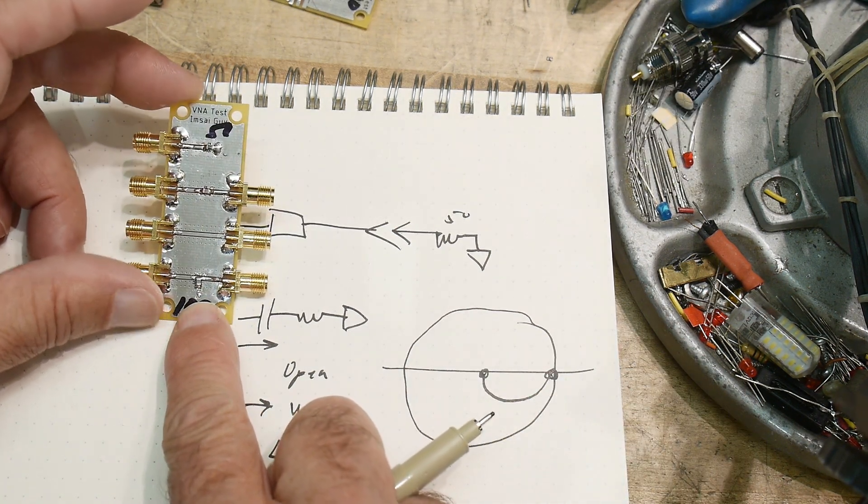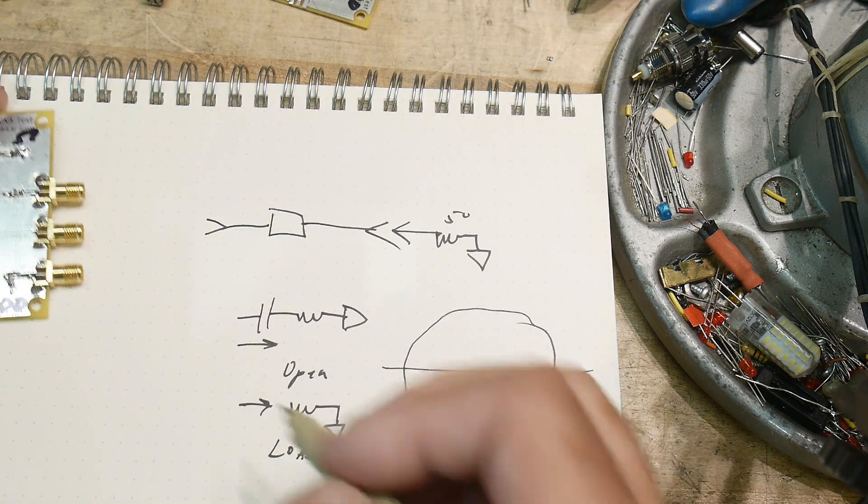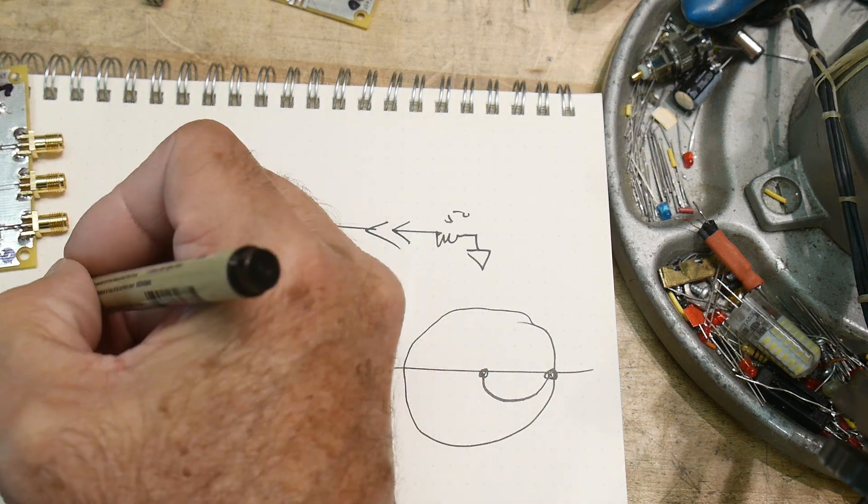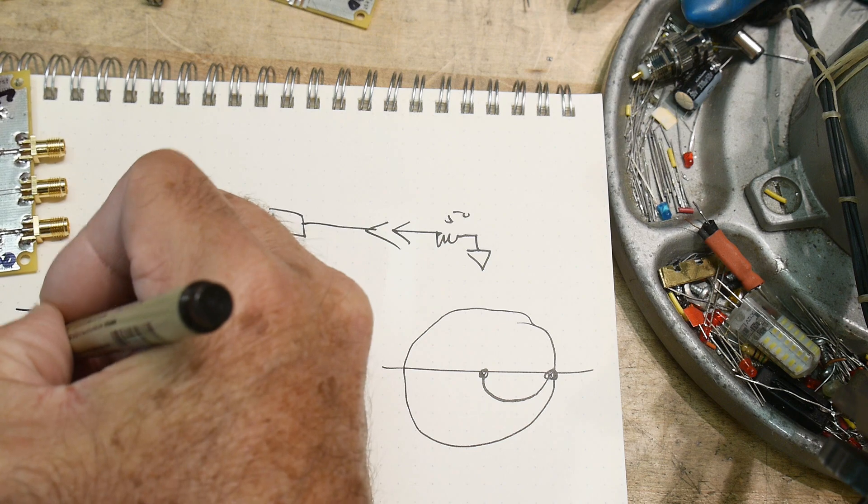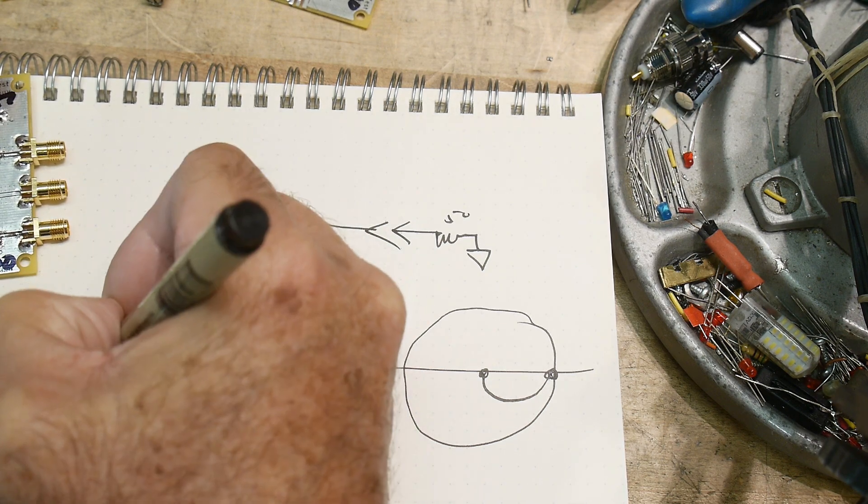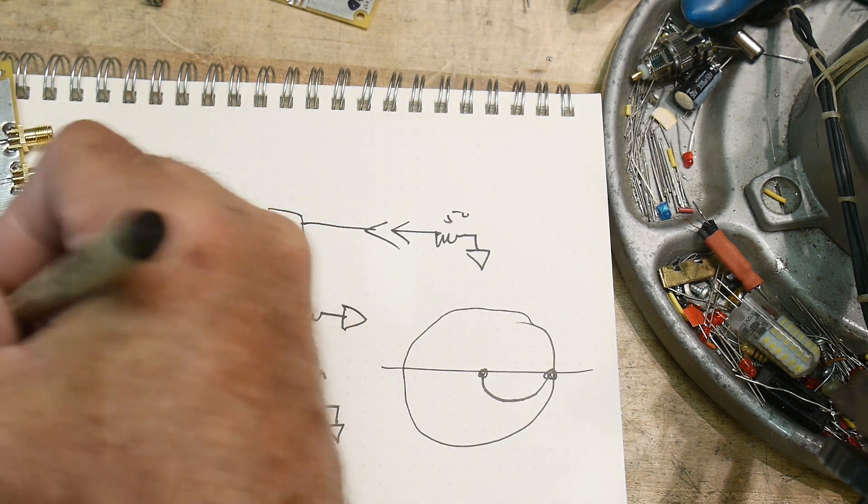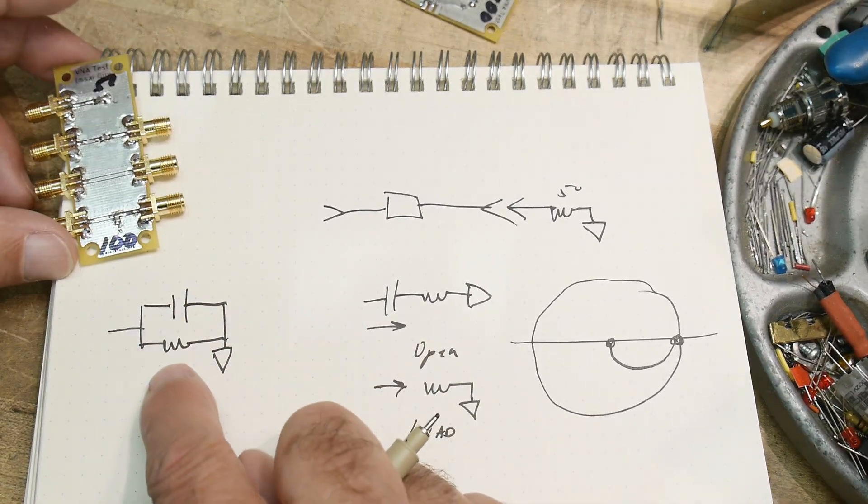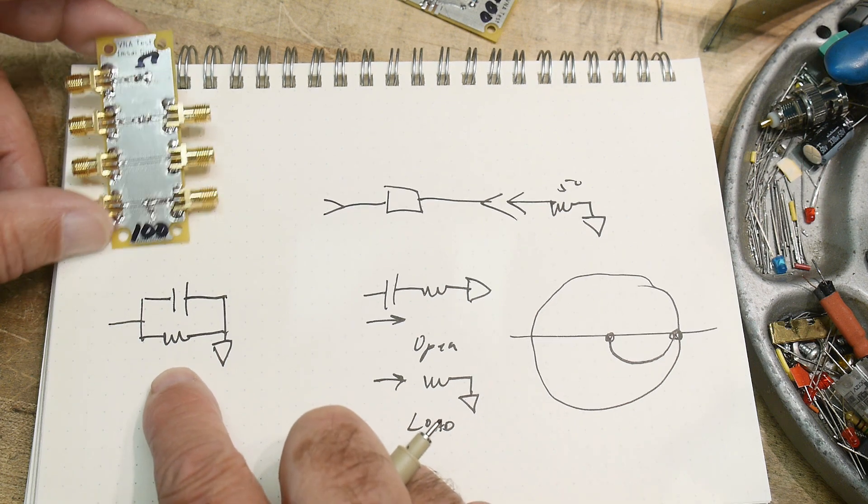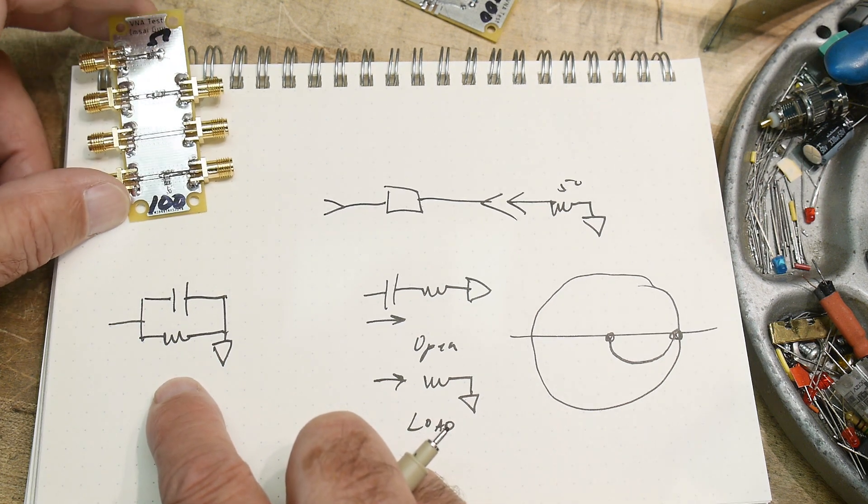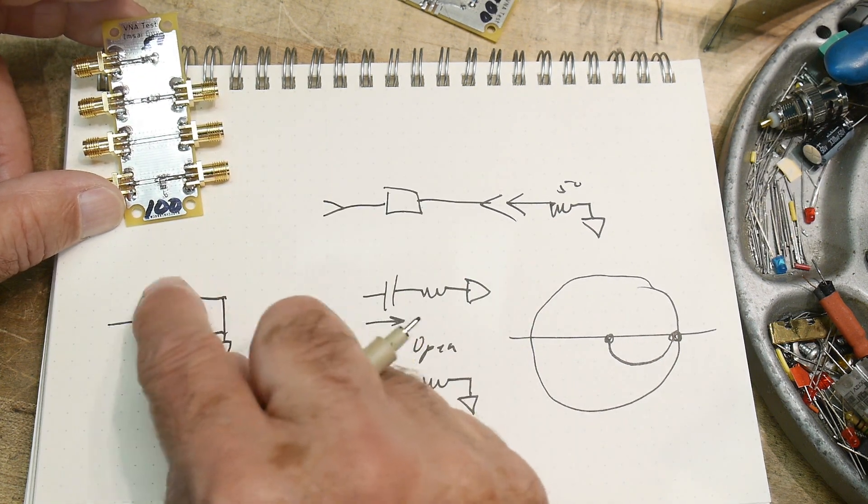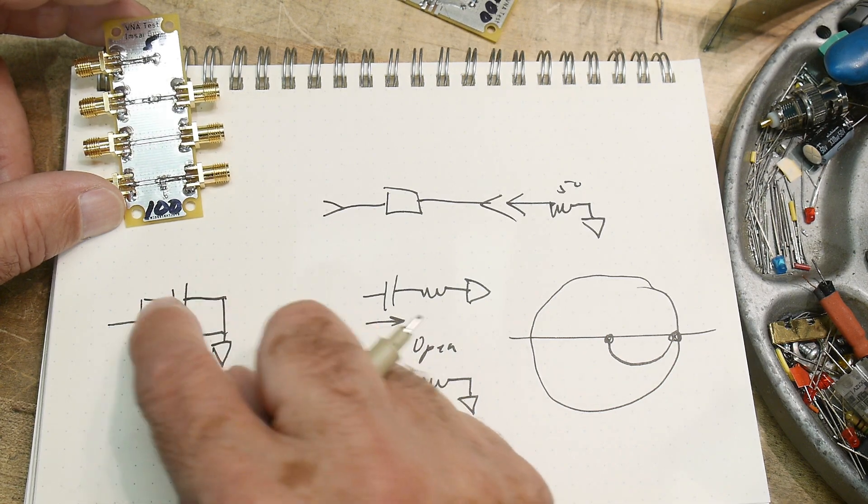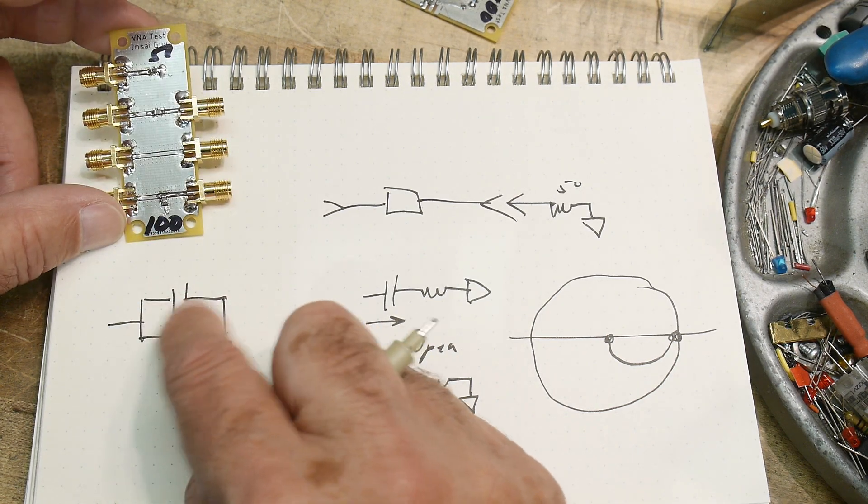I showed another one yesterday where we were using this circuit with a 50-ohm load, and that basically creates a circuit that looks like this where we have the capacitor in parallel with the resistor.